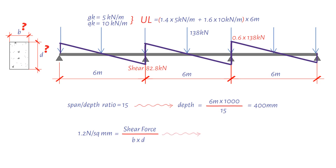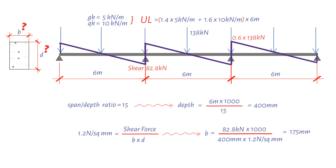This gives a beam width, which is the design shear force of 82.8 kilonewtons times 1000 to convert it to newtons, then divided by the beam depth of 400 millimeters times the design shear stress of 1.2 newtons per square millimeter, giving us an approximate value of 175 millimeters.